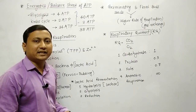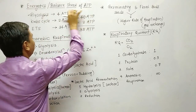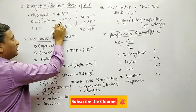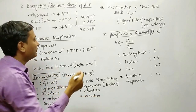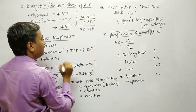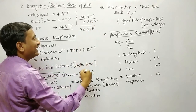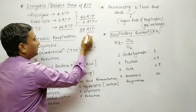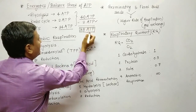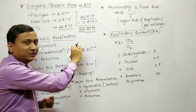The next point is energetics and the balance sheet for ATP. In glycolysis, total 4 ATP are produced. In the Krebs cycle, total 2 ATP. In ETS (oxidative phosphorylation), 34 ATP are produced. Combining all three gives 40 ATP. But in glycolysis, the first and third steps use 2 ATP molecules, which we subtract. So the net total is 38 ATP.